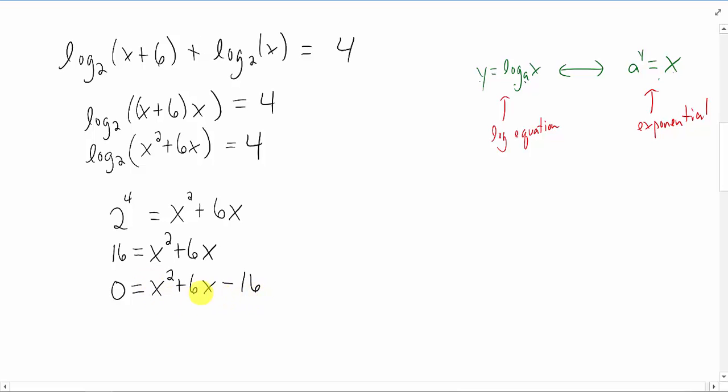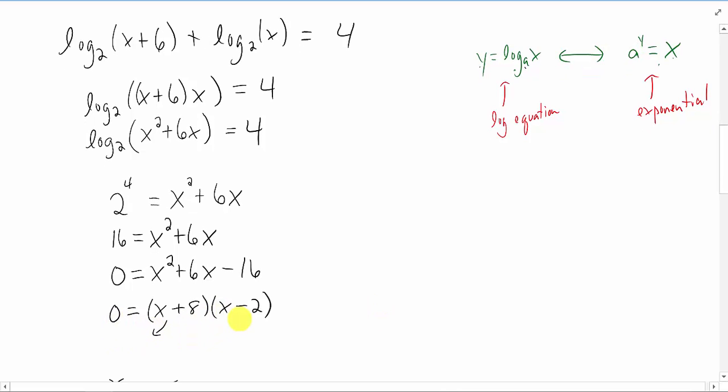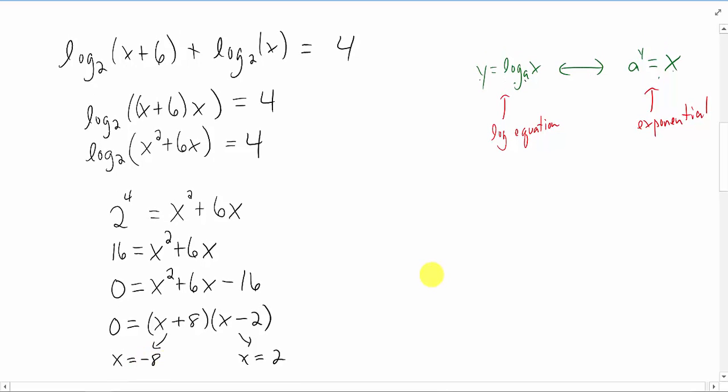Now if we are lucky we can factor this quadratic to save ourselves some time. If we are not lucky we might have to use the quadratic formula. Having two factors multiplied by one another set equal to zero, we can split this problem up into two pieces. We can say x plus 8 equals zero and x minus 2 equals zero separately. That is going to give us two different answers. We have x equals negative 8 as our first possible solution and we have x equals 2 as our second possible solution.